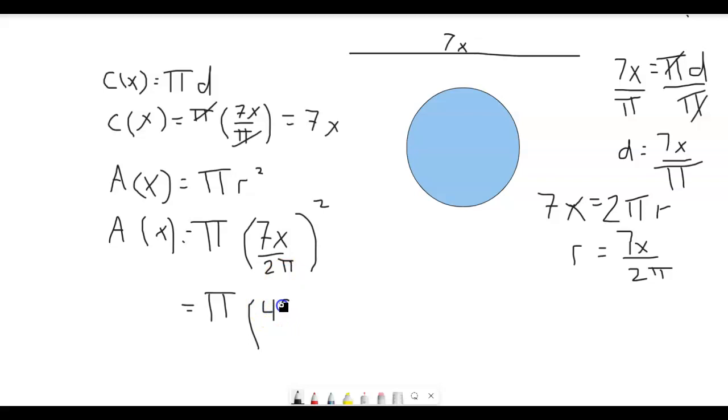And on the bottom, 2 pi is just going to be 4 pi squared. Because pi times pi is just pi squared, and 2 times 2 is 4.